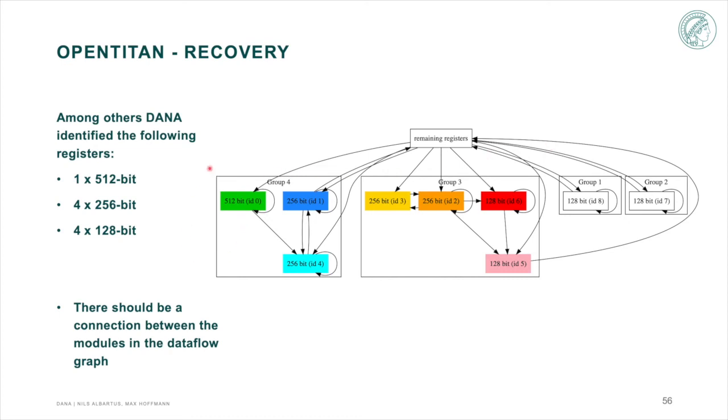Group 4 includes a 512-bit register and two 256-bit registers, exactly the registers expected for a SHA-256 implementation. Group 3 includes 256-bit registers and 128-bit registers which we would expect for an AES-256. However, none of the identified groups match the registers we were expecting to find for the HMAC.